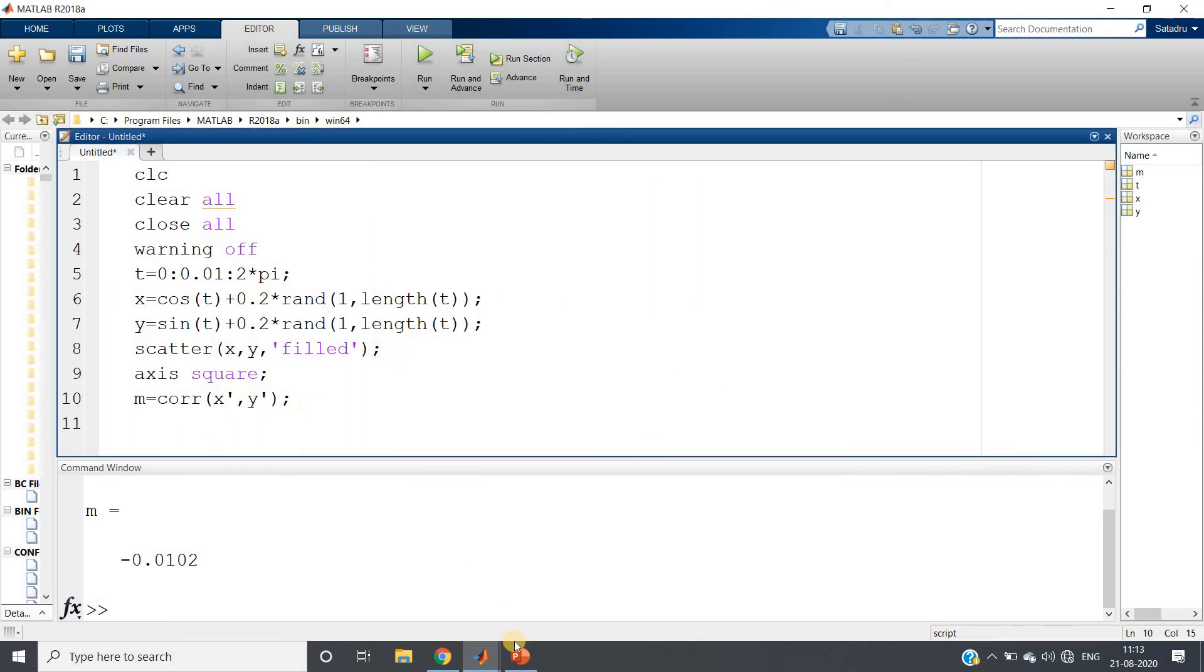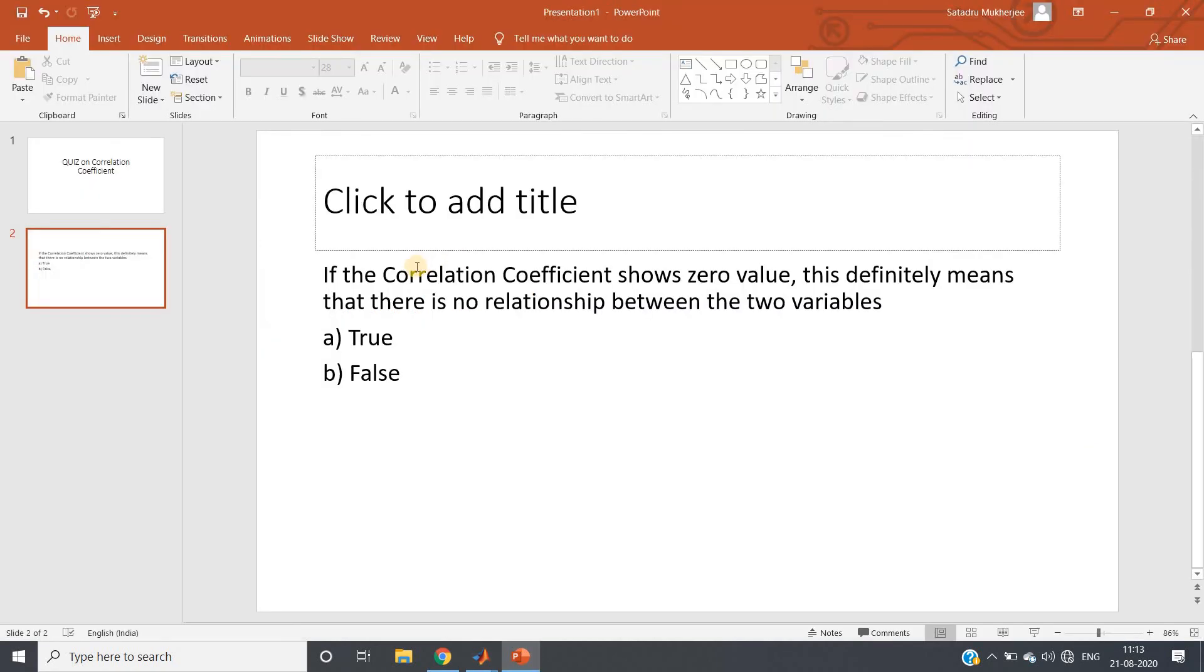So this is one very important popular question: if the correlation coefficient shows 0 value, that does not mean that the two variables have no relationship. It means that they might have no relationship, or they might be strongly related but using some non-linear equation, non-linear relationship. So this is all for my this video.